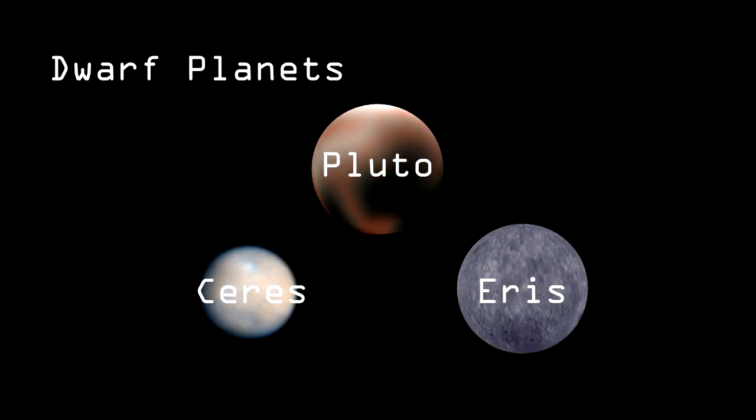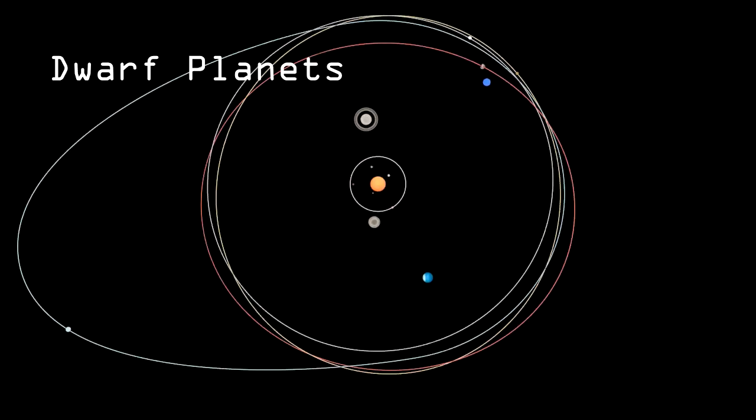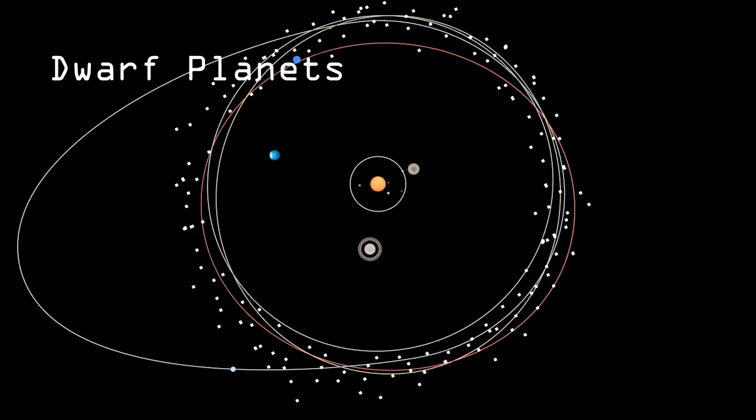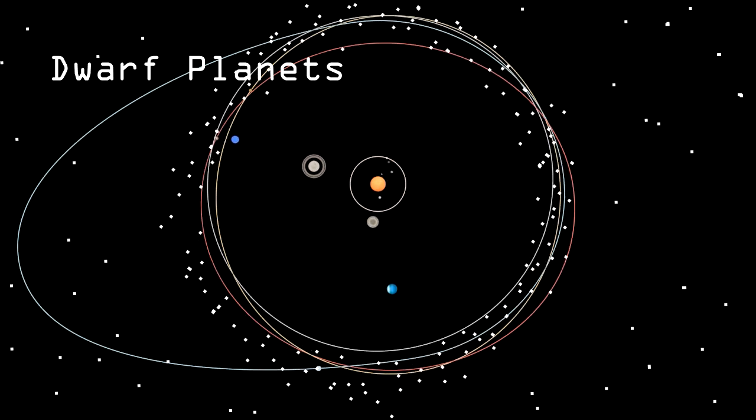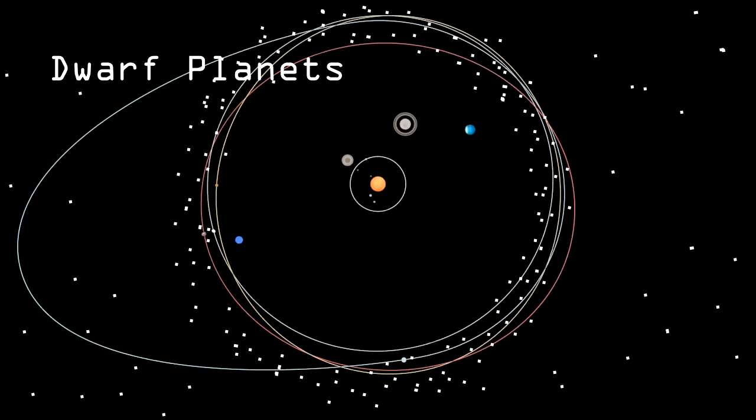And so are Ceres and Eris. As of now, there are only a handful of dwarf planets. But it's suspected that there may be up to 200 in the Kuiper belt. And maybe even more than 10,000 when objects outside the belt are considered.